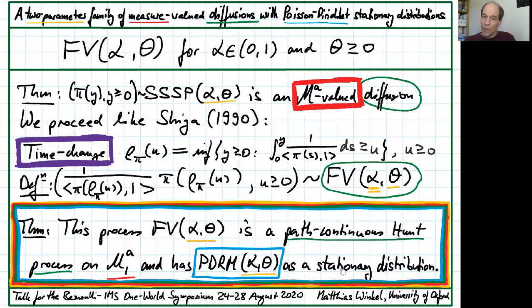In a sequel paper we further show that their ranked atom masses evolve as Petrov's diffusions and hence they're resolving the Feng-Yen-Sun conjecture.